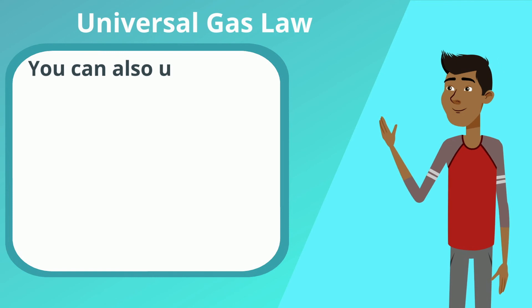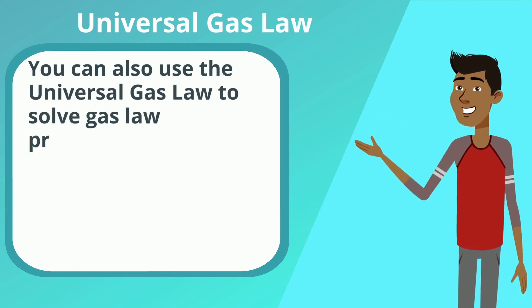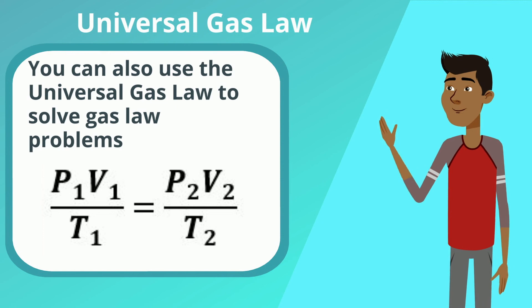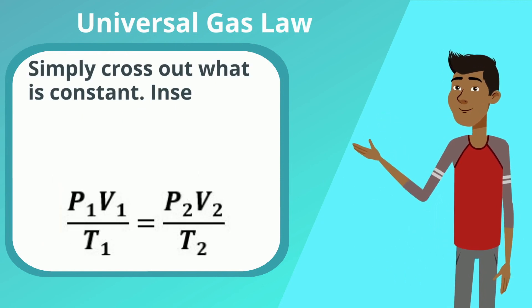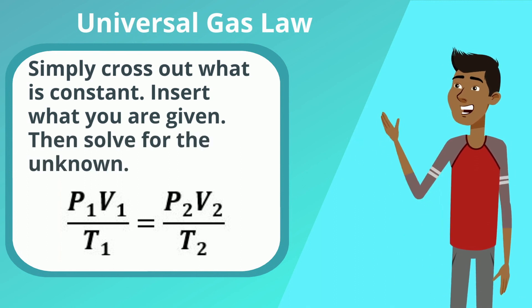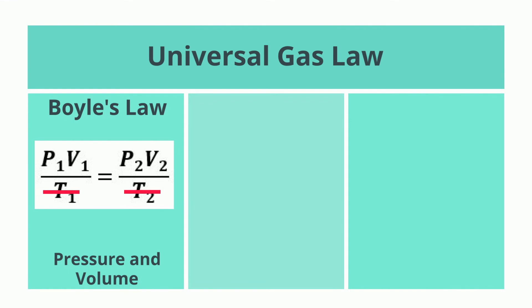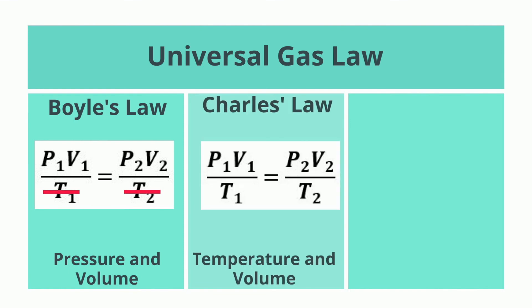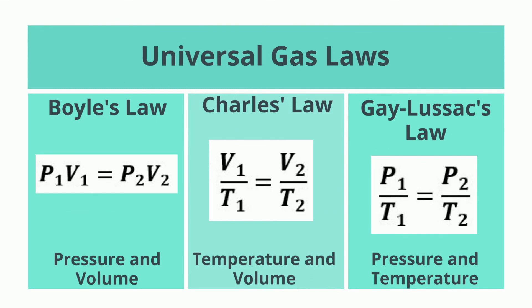You can also use the universal gas law formula to solve the gas law problems. Simply cross out what is constant, insert what you're given, then solve for the unknown. With Boyle's Law, cross out temperature. Charles' Law, cross out pressure. And Gay-Lussac's Law, cross out volume. When you do that, you get the formulas that we're used to.